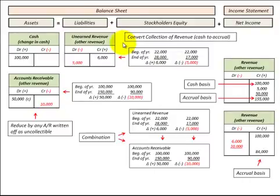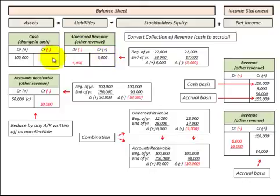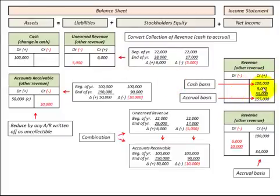For the accrual basis, here's how we handle these accounts. For unearned revenue, where we receive cash payments in advance of any goods or services provided, we'd credit or increase our unearned revenue for that amount, and then debit or increase our cash for the payment received. Then as we earn those revenues, we'd debit or decrease our unearned revenue account and credit or increase our revenue as part of net income.